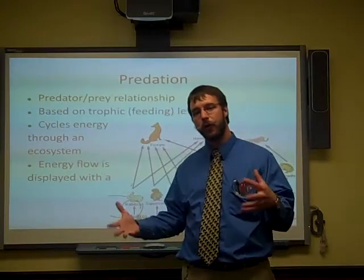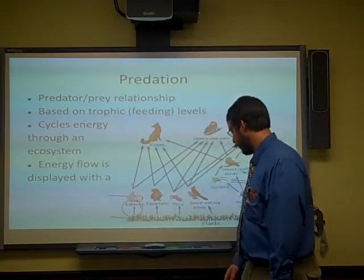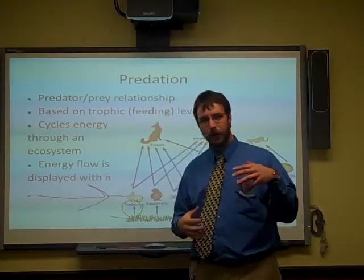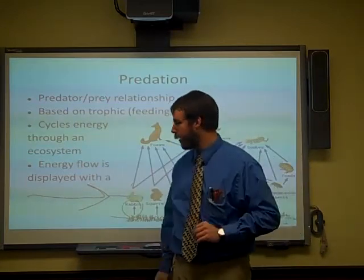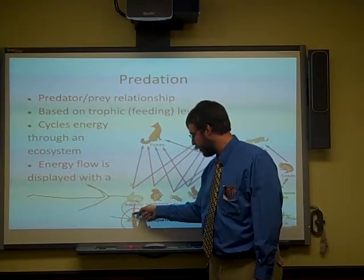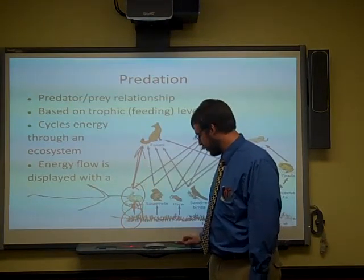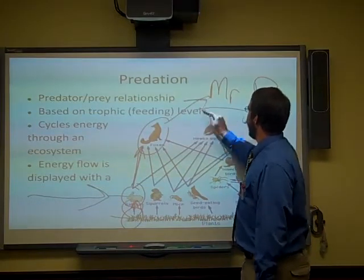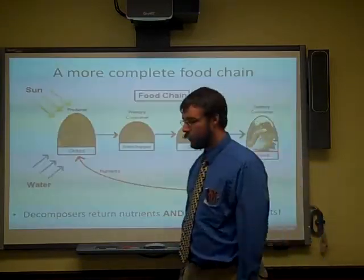Predation cycles energy through the ecosystem — energy that comes from the sun is sent through the entire ecosystem. The arrows in a food web show the direction of energy flow. For example, the energy from the grass goes into the rabbit, then the energy from the rabbit goes into the fox, and so on up the chain.